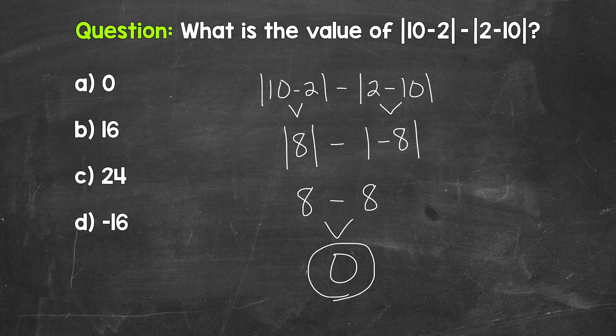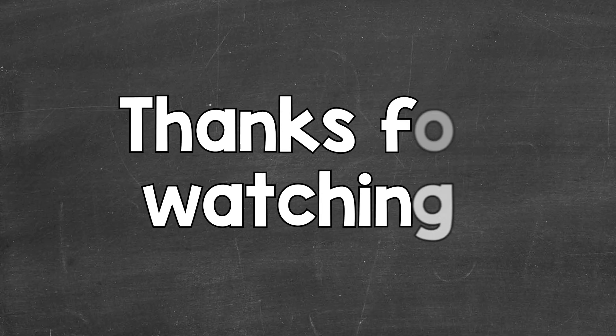So choice A is correct. There's the value of the absolute value of 10 minus 2, minus the absolute value of 2 minus 10. I hope that helped. Thanks so much for watching. Until next time, peace.